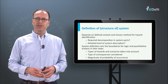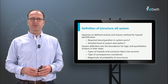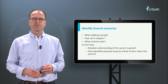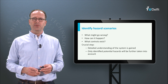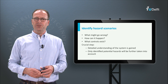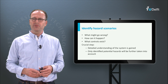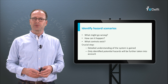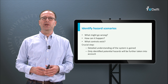When you have defined the context and the system, think about the hazards. We have three questions to guide us: what might go wrong, how can it happen, and what controls do we have to contain the hazards? We can thus gain a more detailed understanding of the system we are looking at. After we have finished this step, we only consider the identified hazards — this is crucial for the rest of the analysis and for the validity of the whole exercise.